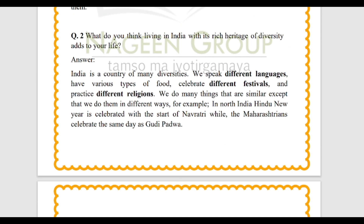India is a country of many diversities. We speak different languages, have various types of food, celebrate different types of festivals, and practice different religions. We do many things that are similar, except that we do them in different ways. For example, in North India, the Hindu New Year is celebrated with the start of Navratri, while Maharashtrians celebrate the same day as Gudi Padwa. In the complete chapter on Understanding Diversity, we learn about the diversity present in India through two different regions - Ladakh and Kerala.